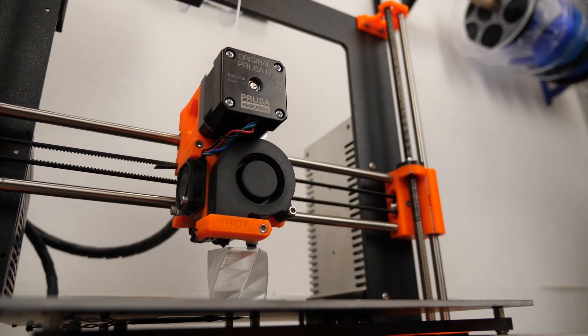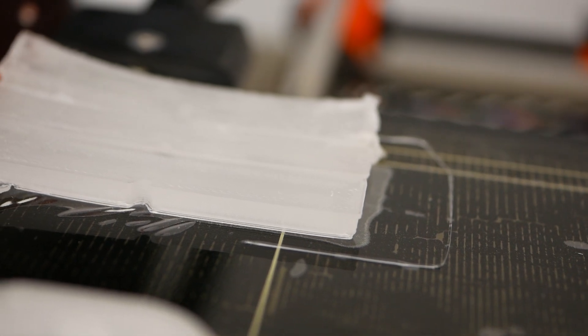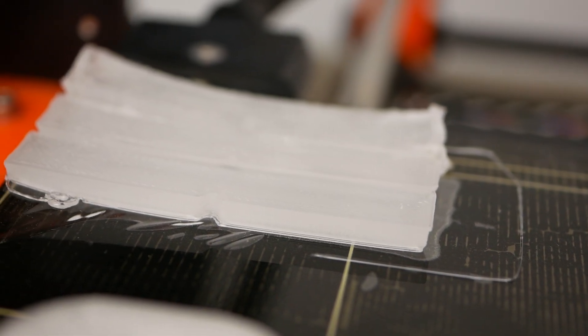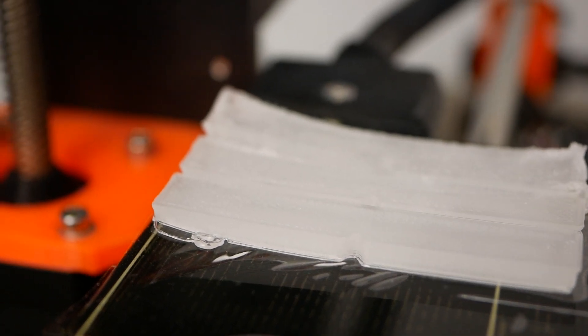I printed most of the samples on a 60°C bed which worked great, and only for larger prints it might be a good idea to rise the temperature to 80°C or even 100°C in order to reduce warping.